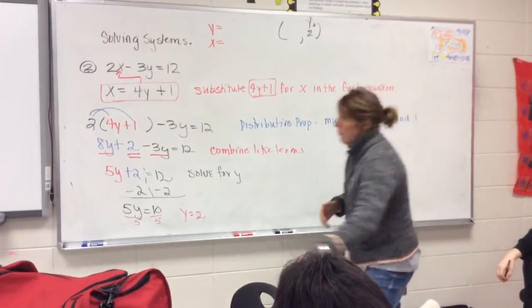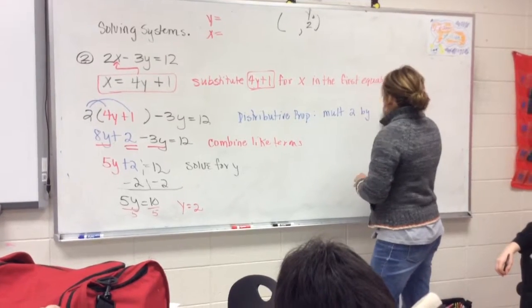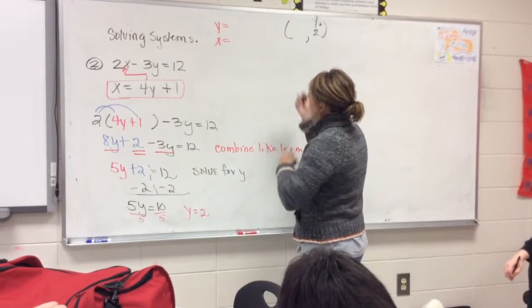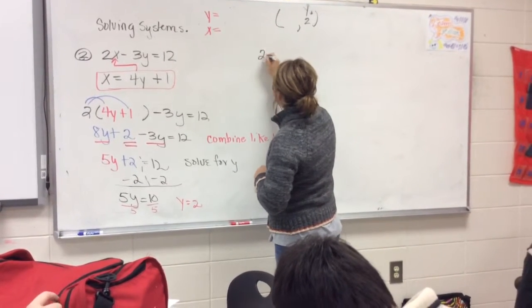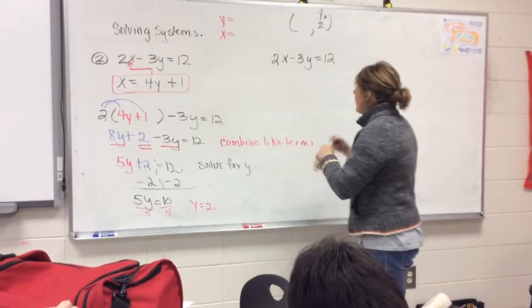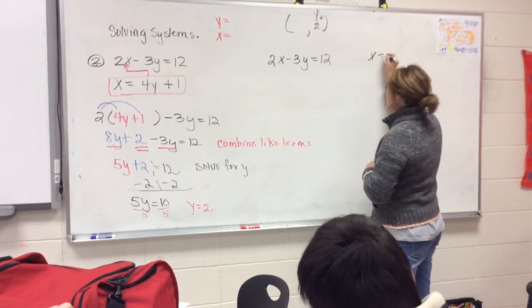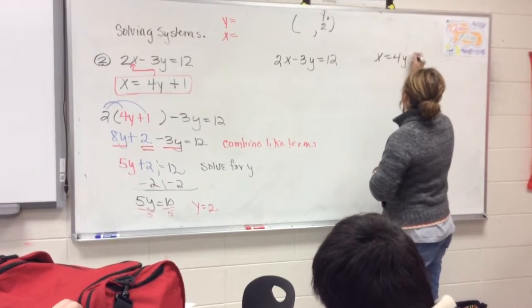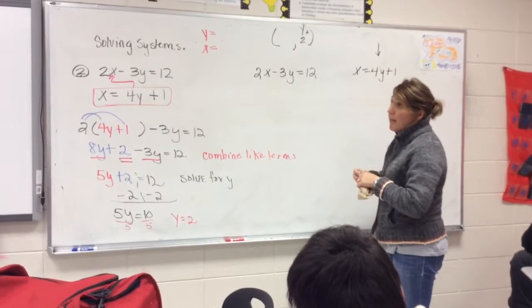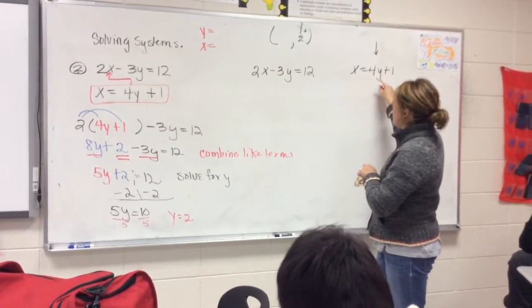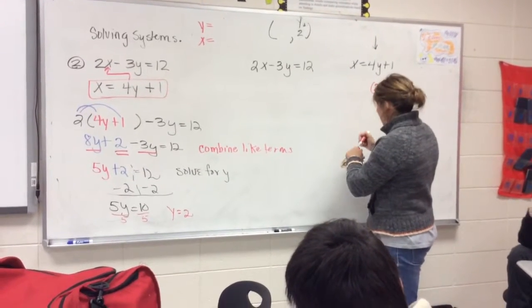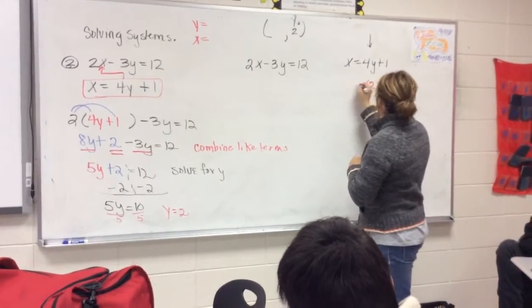Alright, so let's do that. Or you can plug it in the x equals 4y plus 1. And I think Randy said to plug it in. Plug it in the second one. It might be easier to come up with that y value. So where you see y, you're going to plug in the value, which is 2. And then everything else is brought down.